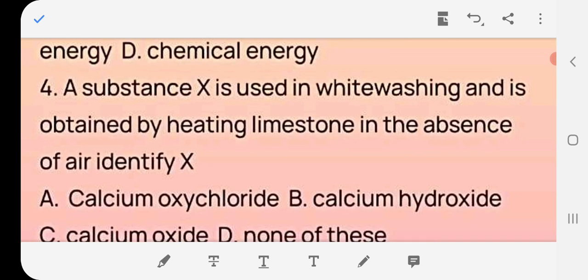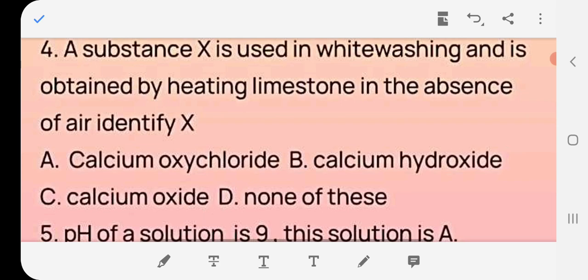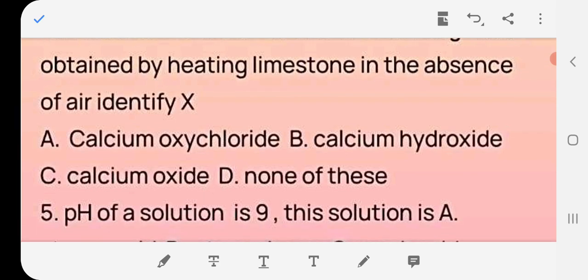Question number four: a substance X is used in whitewashing and is obtained by heating limestone in the absence of air. Identify X. X will be calcium oxide, CaO. The answer is C, calcium oxide.